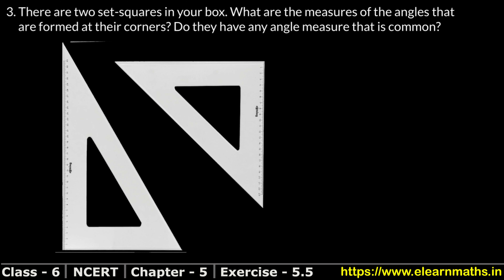Let's do question number three of Exercise 5.5, that is Understanding Elementary Shapes. Question number three is: there are two set squares in your box. These are the two set squares in our pencil box. What are the measures of the angles that are formed at their corners?